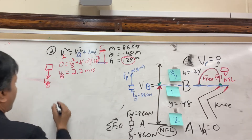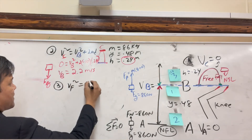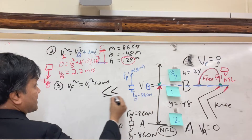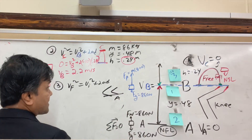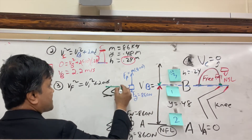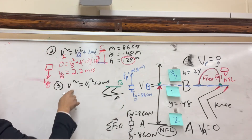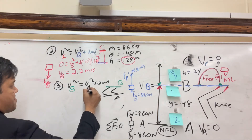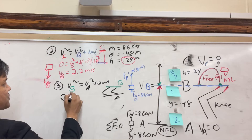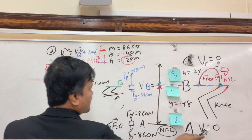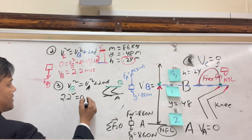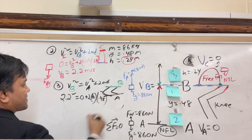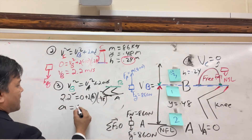For problem number three, we use the squat phase from A to B: vf² = vi² + 2aD, where vf = 2.2 m/s, vi = 0, and D = 0.48 m. Solving: 2.2² = 0 + 2a(0.48), giving acceleration a = 5 m/s².